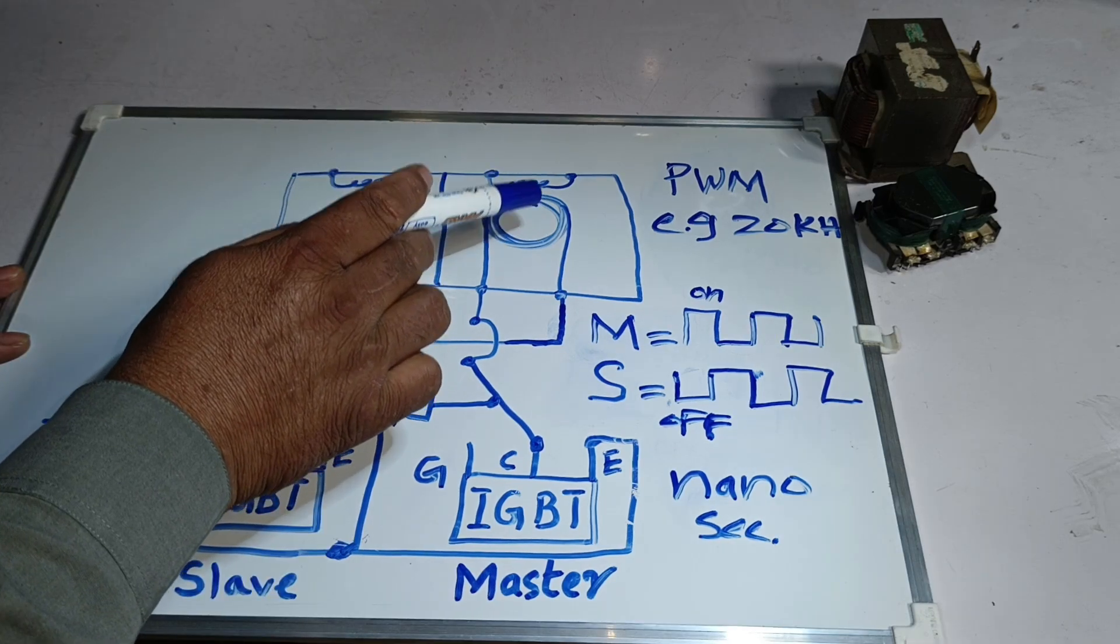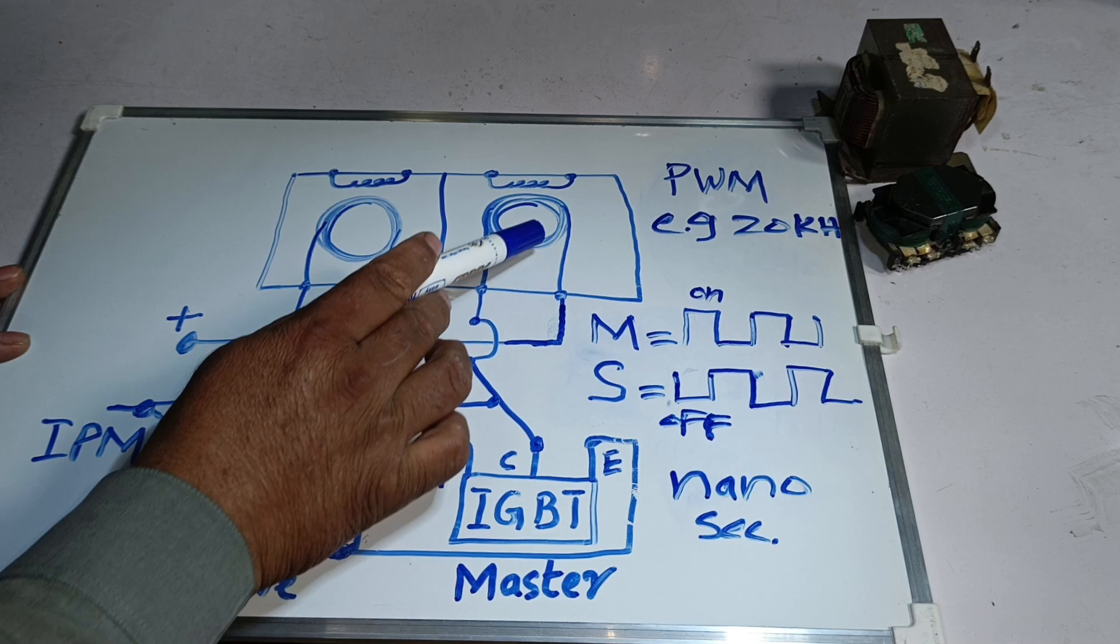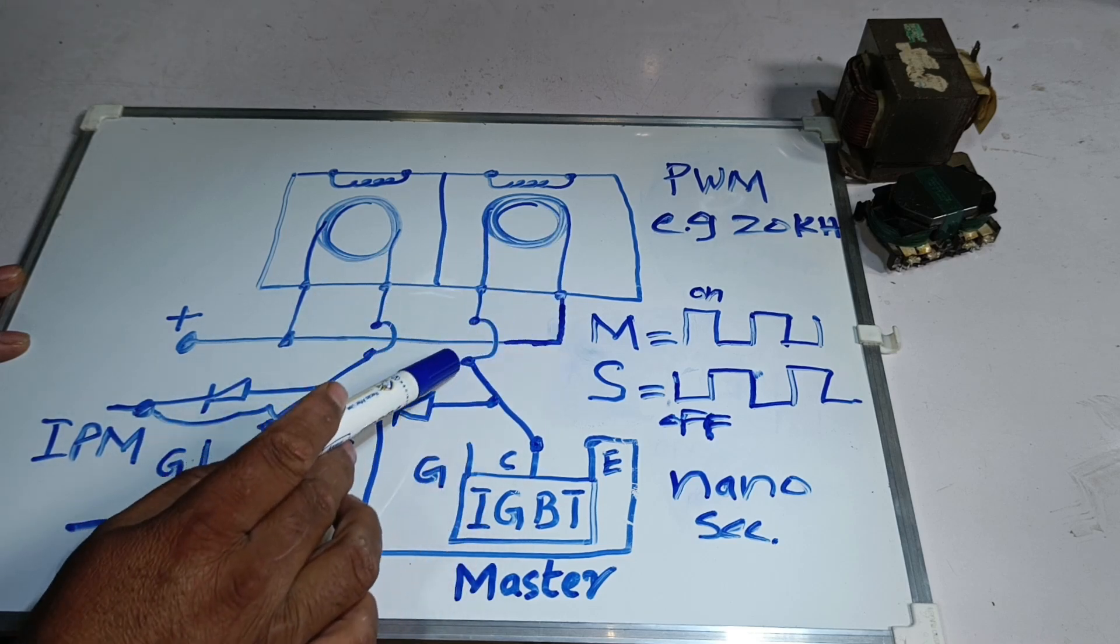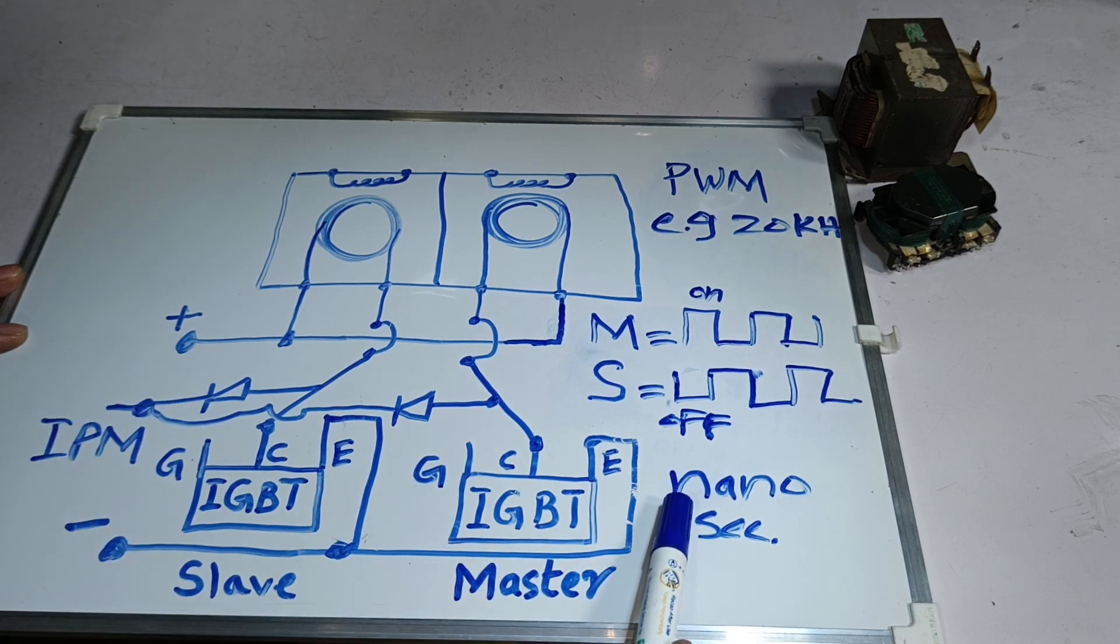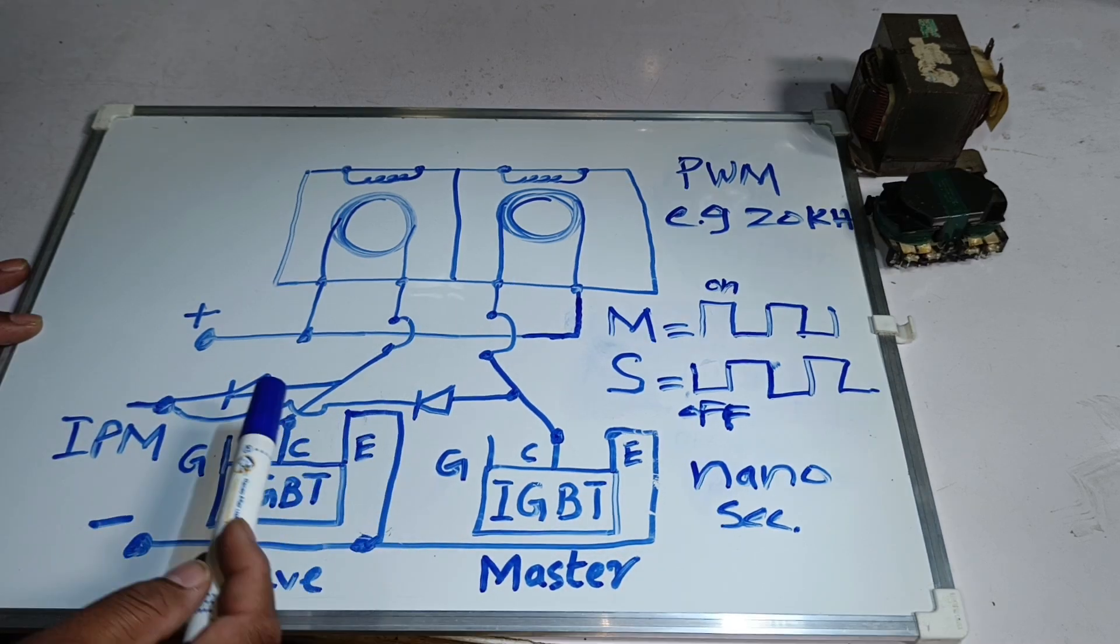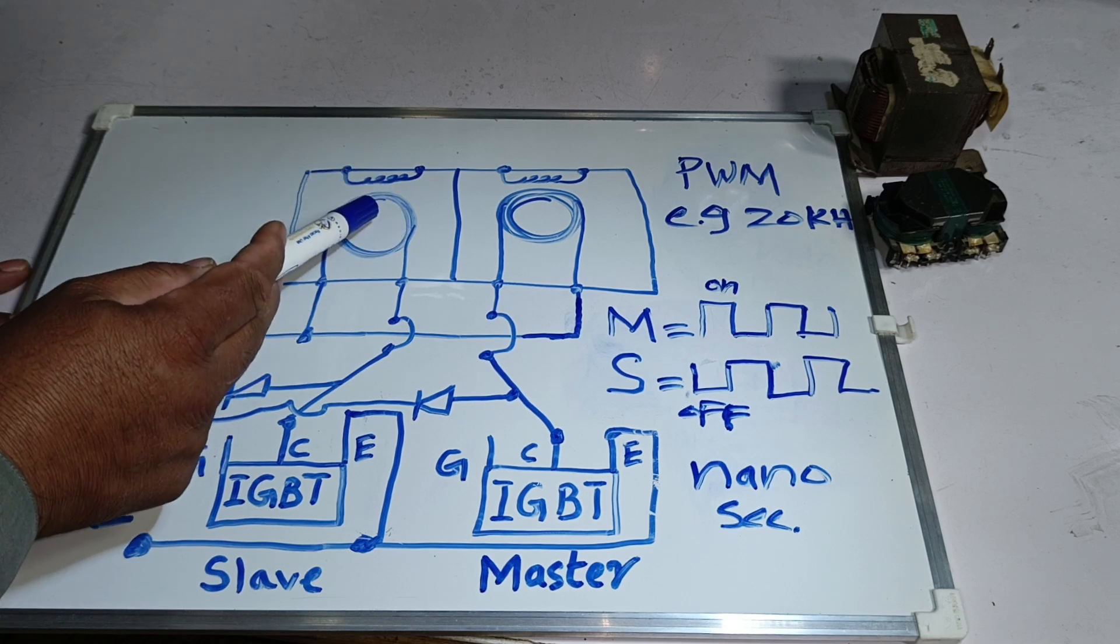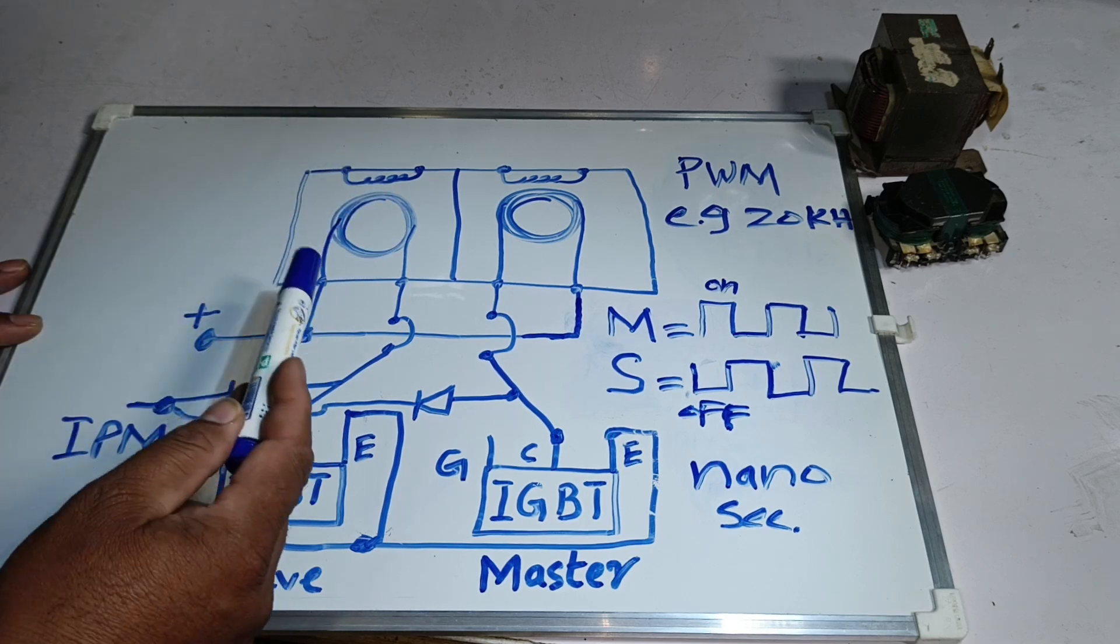This current flow causes the master reactor to charge, storing energy as a magnetic field, while the slave reactor will remain in the off position. As soon as the master reactor charges, the master IGBT will turn off, and the charged current will flow towards the diode, which will direct it to the IPM. A few nanoseconds later, the slave IGBT will turn on, causing the slave reactor to charge. It will then discharge, and the cycle will continue.